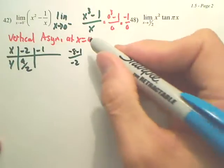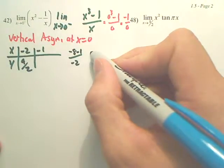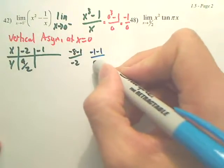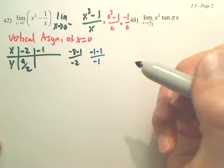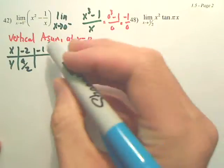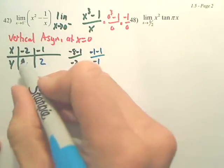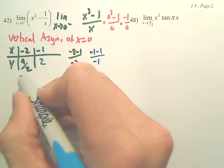And then if we plug in negative one, we get negative one minus one over negative one, which becomes positive two. Is that right? Positive two. Now, this one right here, isn't that 4.5?